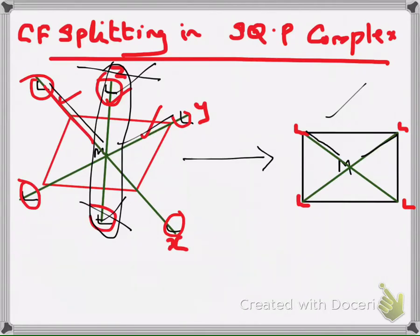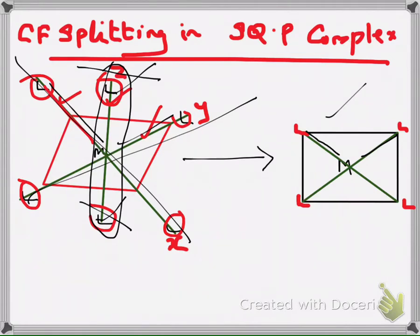At the same time, dx²y² and dxy do not have a z component — they have only x and y components. The other 4 ligands approach through the x and y axes, so dx²y² and dxy experience greater repulsion than in an octahedral environment. Therefore, the energy of dx²y² and dxy increases to a greater extent, while the energy of dxz, dyz, and dz² is reduced. That kind of splitting can be seen in square planar complexes as a result of removing 2 ligands from the octahedral complex.